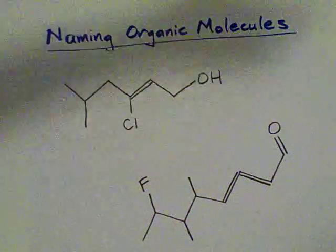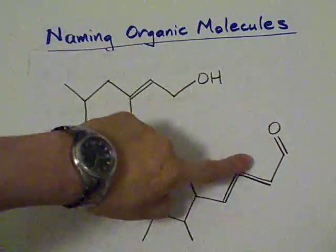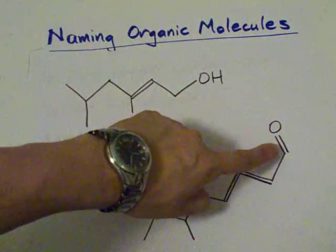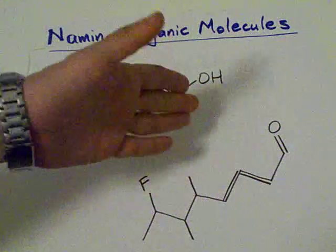This is an alcohol, because it has an OH on it. This is an aldehyde, because it ends with a double bonded O. If that double bonded O was in the middle, it would be a ketone.